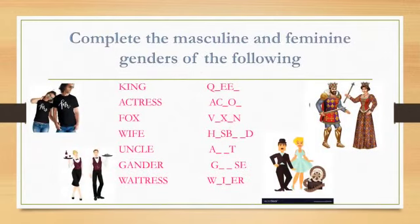Complete the masculine and feminine genders of the following: King — Q _ _ _ N. Actress — A _ _ _ O _.